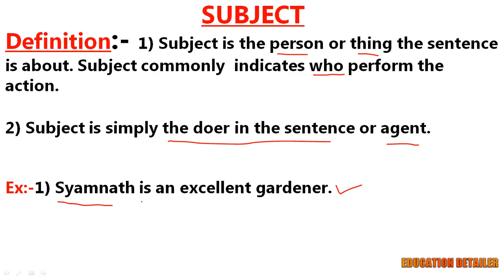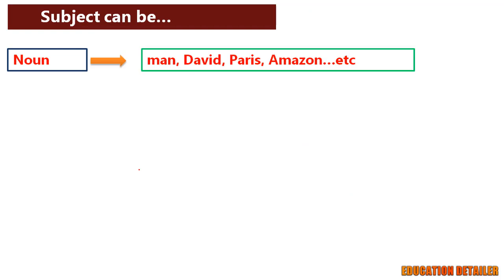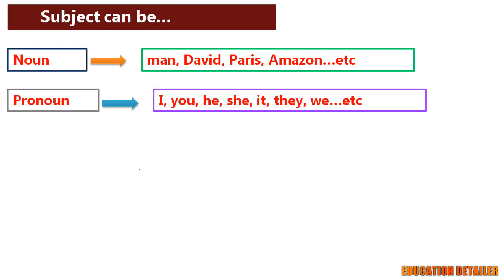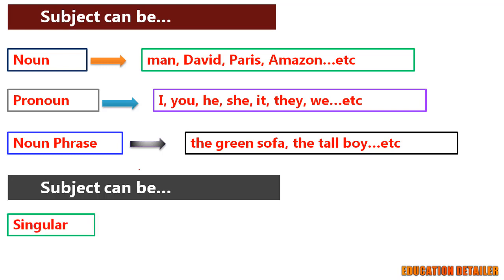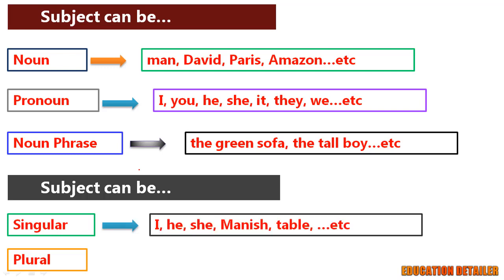To identify a subject in an easy way, ask a question: who or whom is the sentence about? Who is an excellent gardener? Shamanath. So Shamanath is the subject here. In this example, the subject is a noun. Remember, a subject can be a noun like man, David, Paris, Amazon, etc. It can be a pronoun like I, you, he, she, it, they, we. And also it can be a noun phrase like the green sofa, the tall boy, etc. And one more thing you need to know: a subject can be singular or plural.